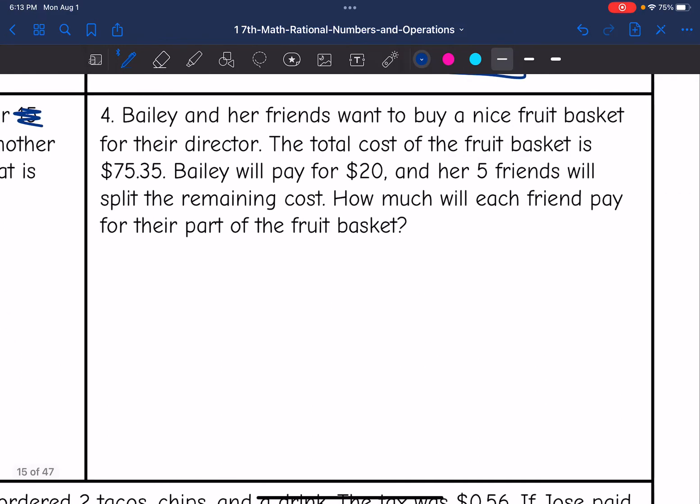Let's look at number 4. Bailey and her friends want to buy a nice fruit basket for their director. The total cost of the fruit basket is $75.35. Bailey will pay for $20 and then her 5 friends will split the remaining cost. How much will each friend pay for their part of the fruit basket? So the total of the fruit basket was $75.35, and then Bailey's going to pay for $20, and then whatever that is, her 5 friends will split that cost. So we'll divide it by 5.